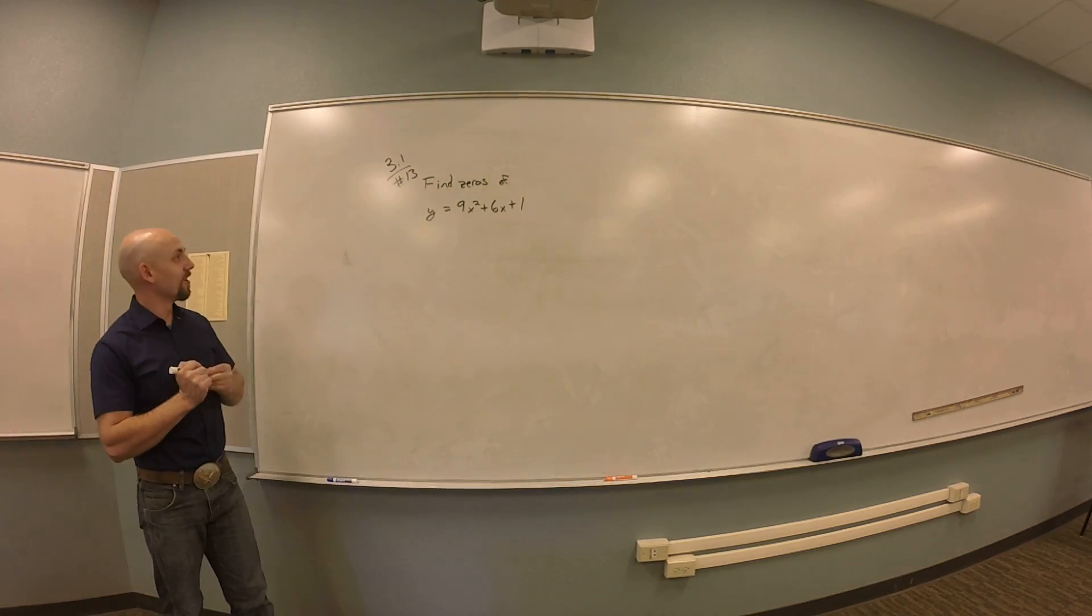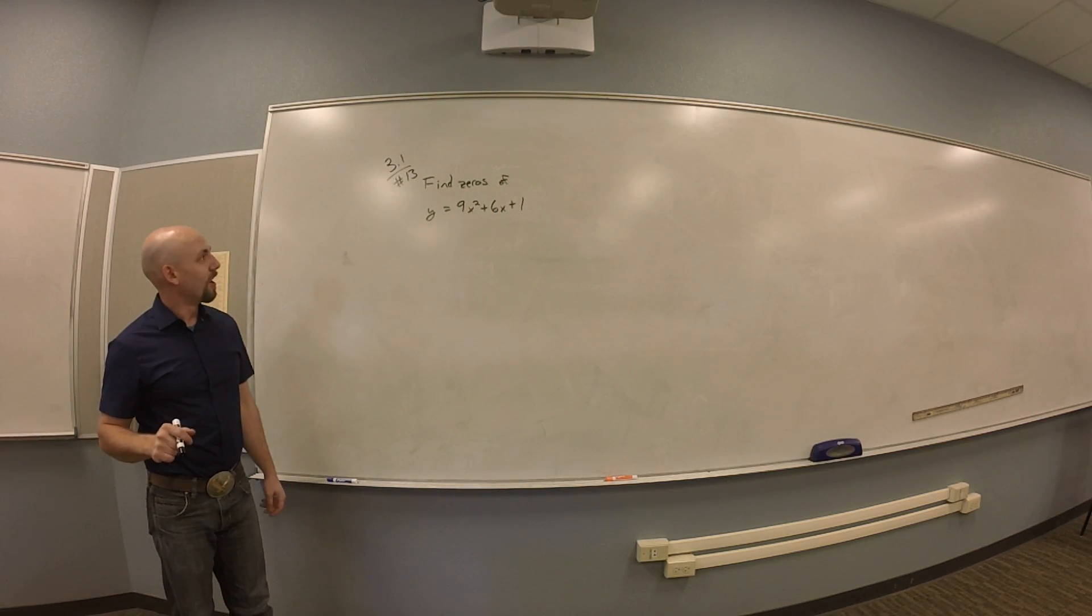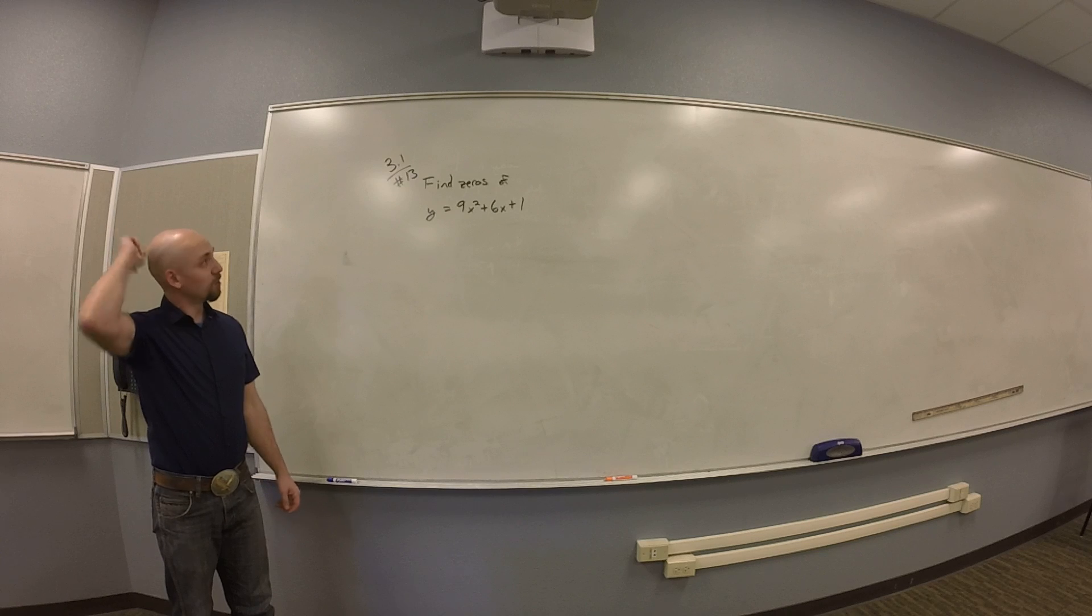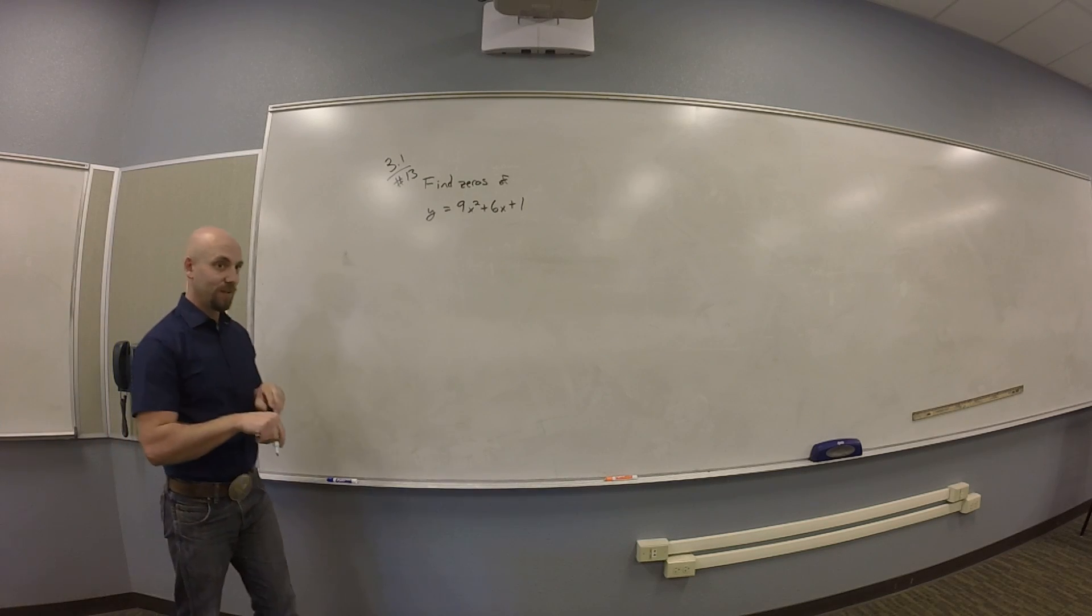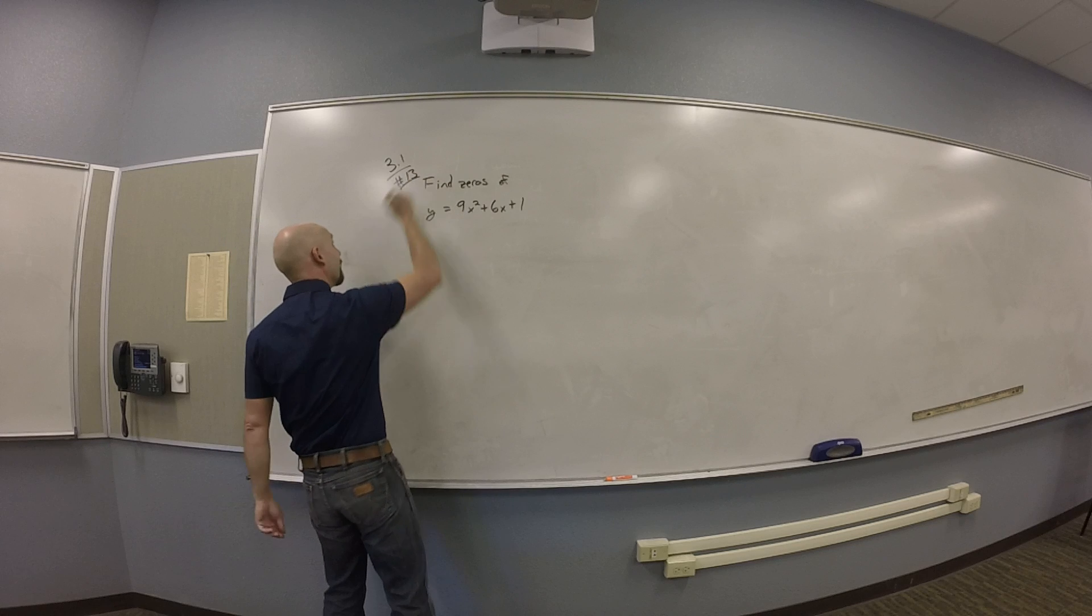So I should be finding zeros of y equals 9x squared plus 6x plus 1 for problem 3.113. I finally figured out the right problem.